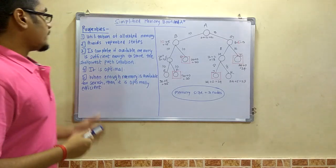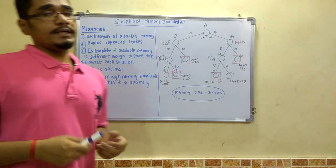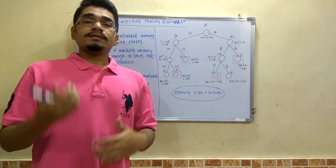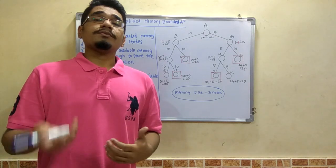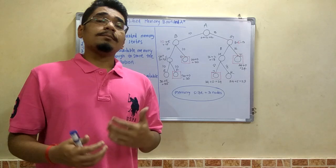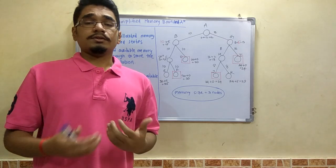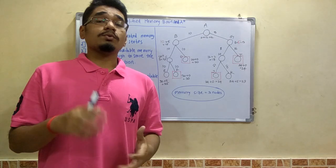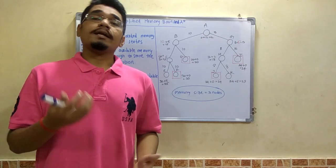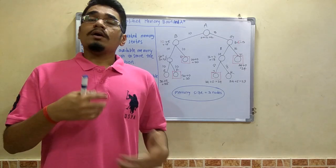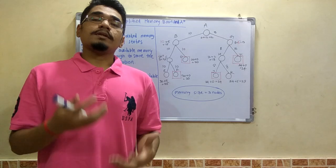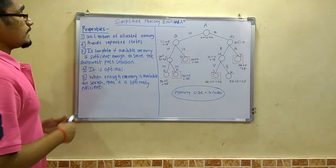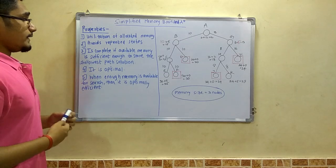Next, SMA* avoids repeated states. The SMA* algorithm identifies states uniquely — if two states arise from repeated actions, it will avoid that repeated processing and store only unique nodes in the tree, compressing all nodes in an optimized way.